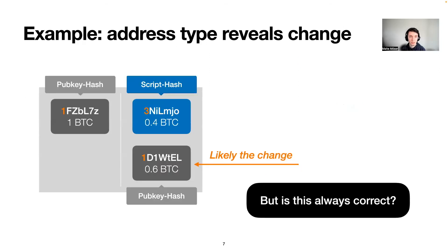Let me give you a quick example for how that might work. Imagine you use a classic wallet that uses classic pubkey hash address types and then you make a payment to a merchant who uses a multi-sig address wrapped in a script hash address. Then it is very easy to tell apart the change and the spend, because the change is likely the output that has the same address type as the input.